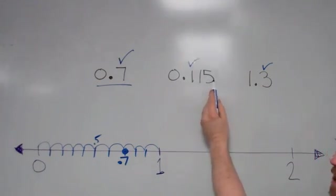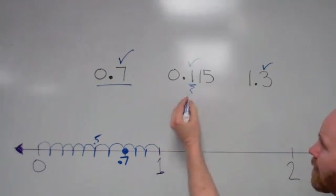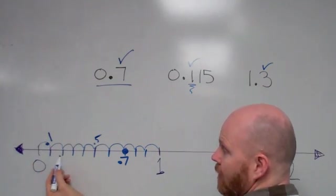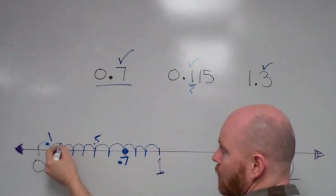0.115. Now this 1 right here means I'm going to go to this location right here. Now here's 0.1, here's 0.2.